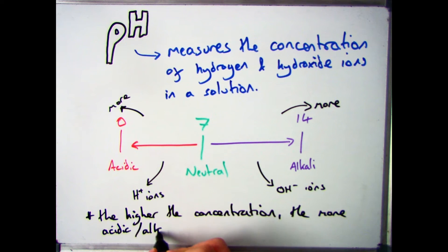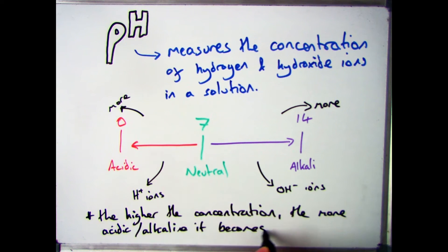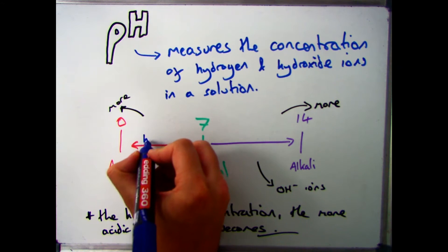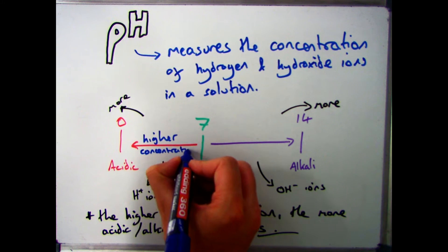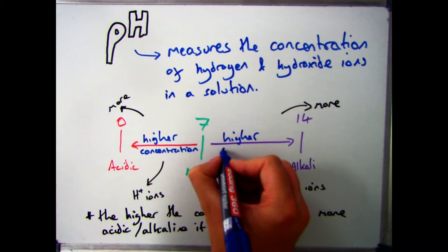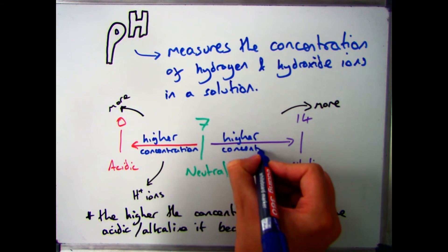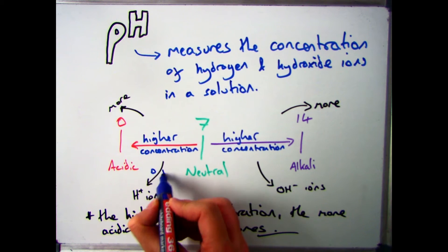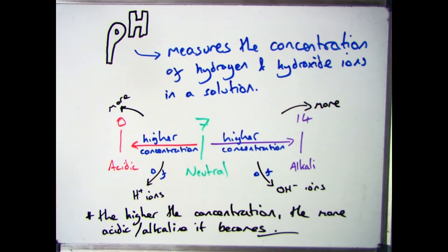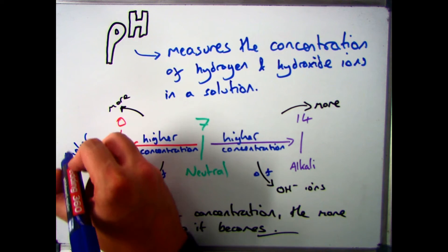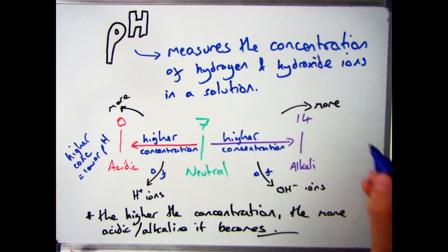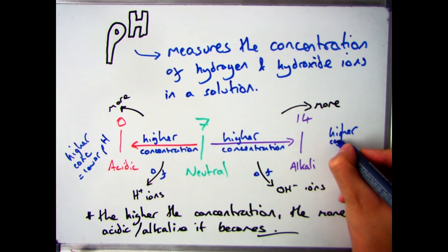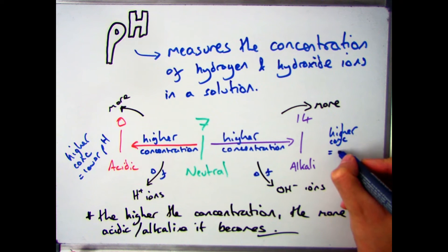The key thing to take from this video is that pH measures the concentration of hydrogen and hydroxide ions. So if you have more H+ ions, you have a higher concentration, and if you have a higher concentration, the pH is going to be lower. The same thing happens with alkalis, but it goes the opposite way. So if you have more OH- ions, the concentration of OH- ions goes up, and therefore the pH will increase.